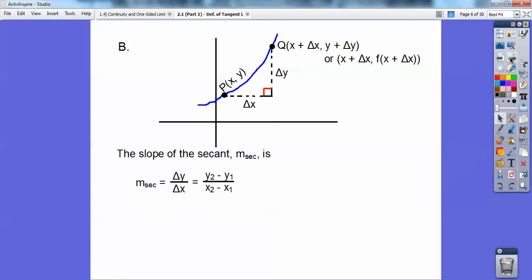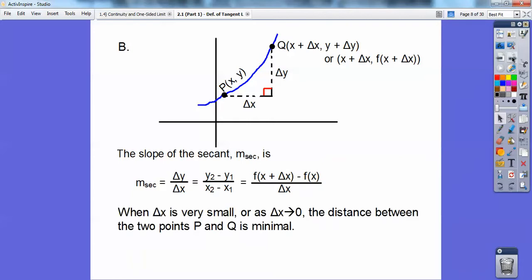The slope of the secant—remember slope is y₂ - y₁, which is just Δy/Δx. So the slope of the secant line, m_sec, is Δy/Δx = [f(x + Δx) - f(x)]/Δx.